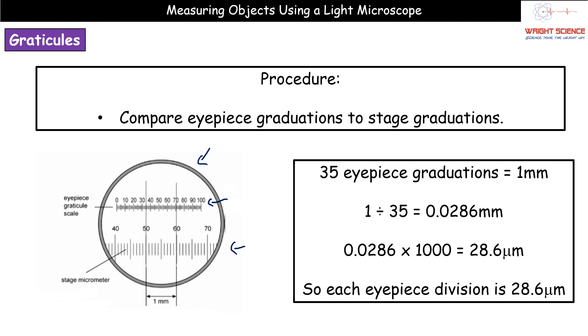So how do we work out what that is worth in terms of an actual measurement? One millimeter divided by 35 tells us that each of those little graduations on the eyepiece is equivalent to 0.0286 millimeters. Because we don't often use millimeters when using our light microscopes we then multiply that by a thousand to give us 28.6 micrometers. So what we can say is using this lowest power objective, our eyepiece division is equivalent to 28.6 micrometers.